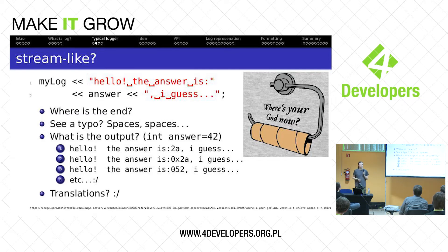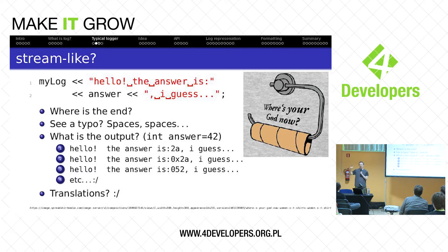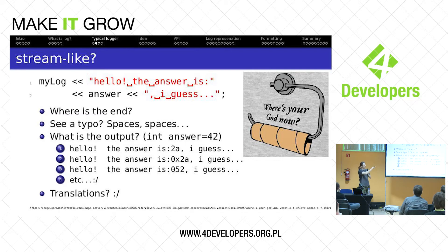And last: translations. If you have a log that will need to be localized — for instance, displayed on a form for an end user — in some domains there is a requirement to have audit logs in the local language for given users. Then there is a problem because here the log has a sentence scattered with parameters in between, so you cannot actually easily change the order of things, and it's kind of problematic.